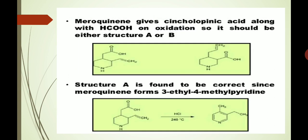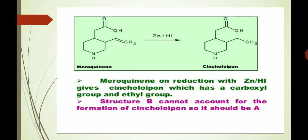Meroquinine gives syncholopinic acid along with formic acid on oxidation, so it should be either structure A or structure B, as shown in the following diagram. Structure A is found to be correct, since meroquinine forms 3-ethyl-4-methylpyridine, and the formation of this product is only possible when we assume structure A for meroquinine. Meroquinine on reduction with zinc and hydrogen iodide gives a product with a carboxylic group and an ethyl group. Structure B cannot account for the formation of syncholopinone. So the structure of meroquinine is undoubtedly A.